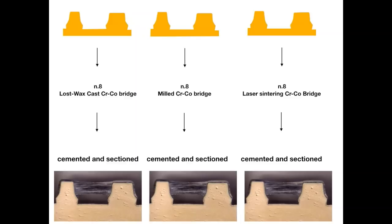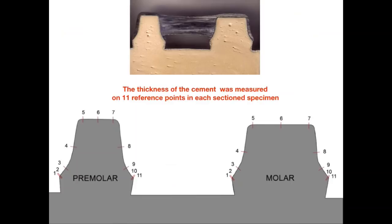They cemented the bridges onto the abutments and sectioned the abutment and metal structure to analyze the thickness of the cement internally. They measured the thickness of the cement at 11 reference points in each section of the specimen, as you can see in the drawing.